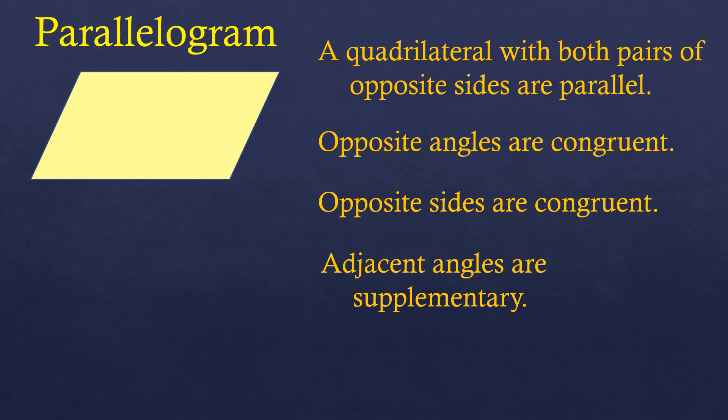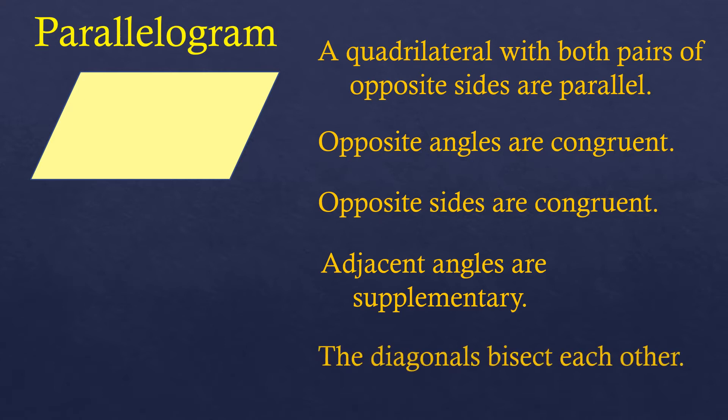Adjacent angles are angles that are not opposite to each other but are at the side of each other. Also, the diagonals bisect each other — meaning the diagonals cut into half with each other.